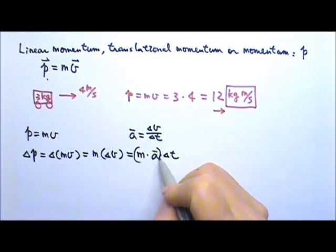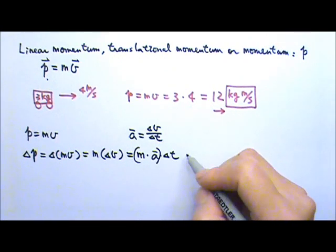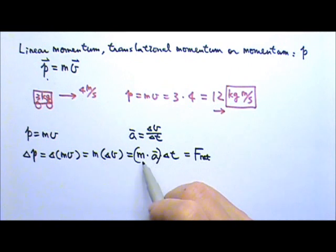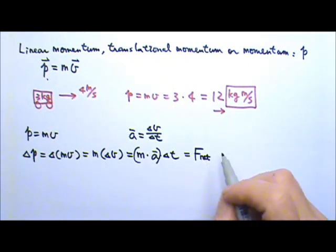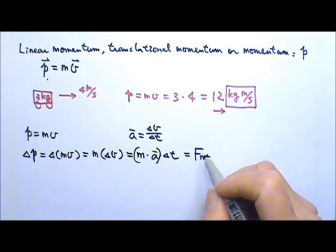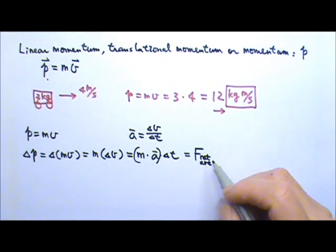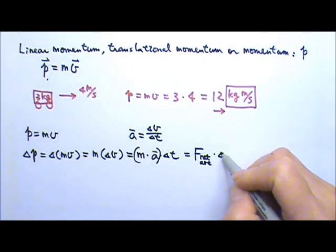And what is this m times a? That would be the net force. And this bar here is the average acceleration. Which means what I get is the average net force. So the change in momentum equals the average net force times the time.